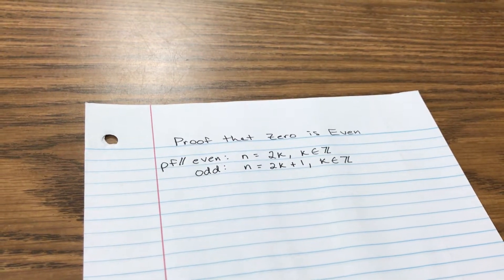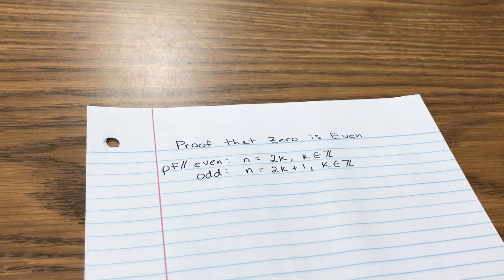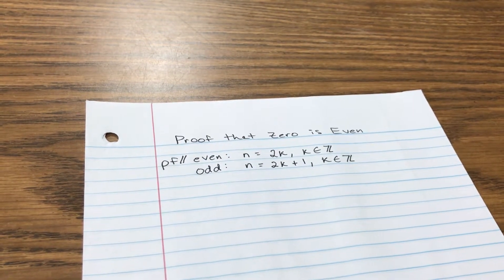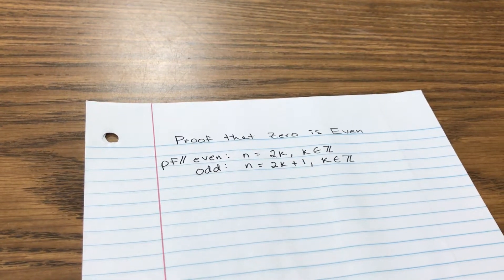So let's look at the evens first. What if k is 1? Well, 2 times 1 is 2, so 2 must be even. What if k was 2? Well, then I'd get n is 2 times 2, which is 4, and we know that 4 is even.